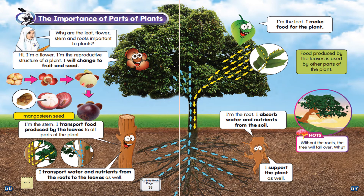Look at this picture of a tree. There are flower, stem, leaf, and root. Why are the leaf, flower, stem, and roots important to plants? The flower says: I am the reproductive structure of a plant. I will change into fruit and seed. Now look at this example of a mangosteen seed.